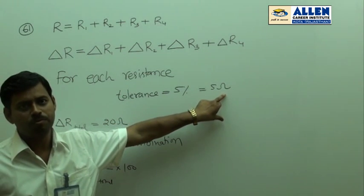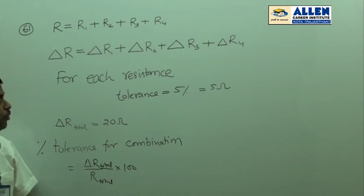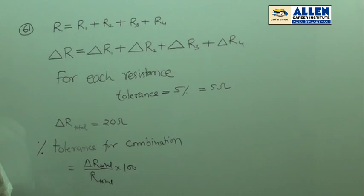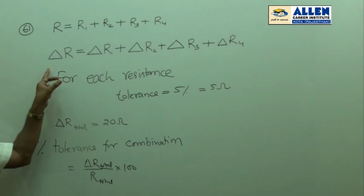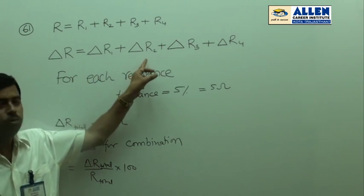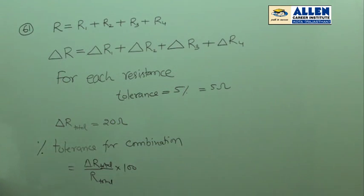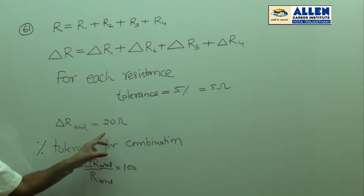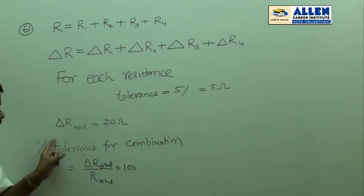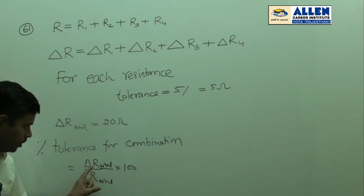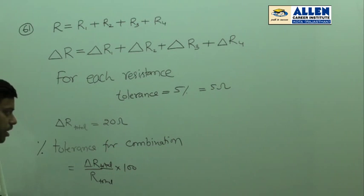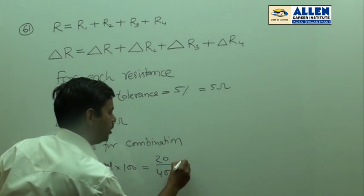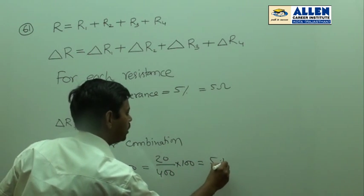Since absolute errors are added, the total tolerance in the combination will be delta R equals delta R1 plus delta R2 plus delta R3 plus delta R4, hence the total will be 20 ohm — that is 5 plus 5 plus 5 plus 5. Percentage tolerance will be equals to tolerance divided by total resistance into 100, which is 20 divided by 400 into 100, so it equals 5 percent. The correct answer is option second.